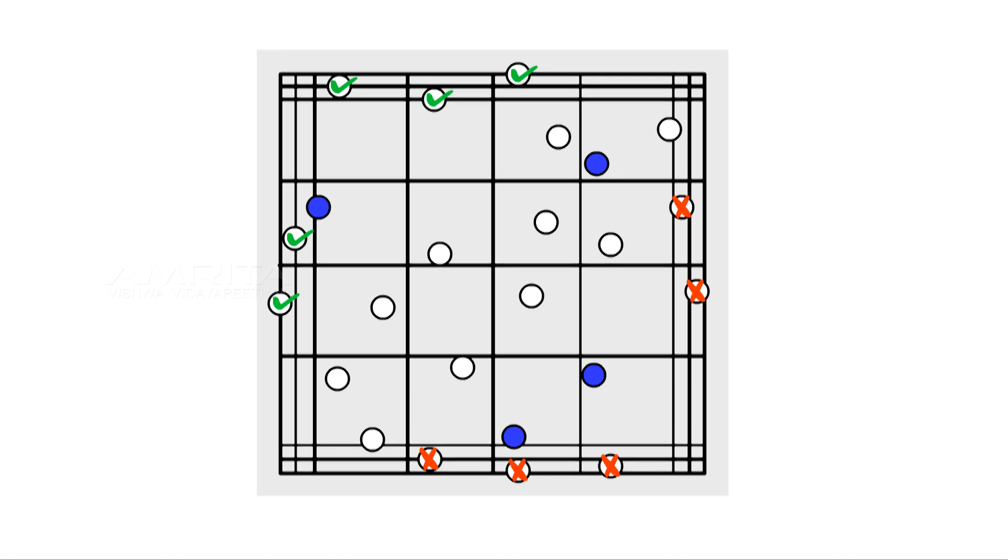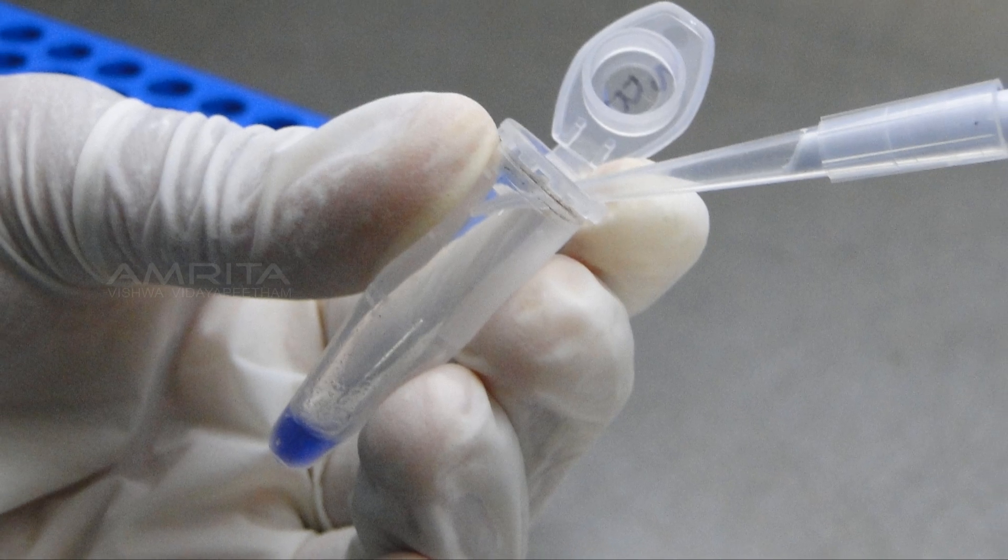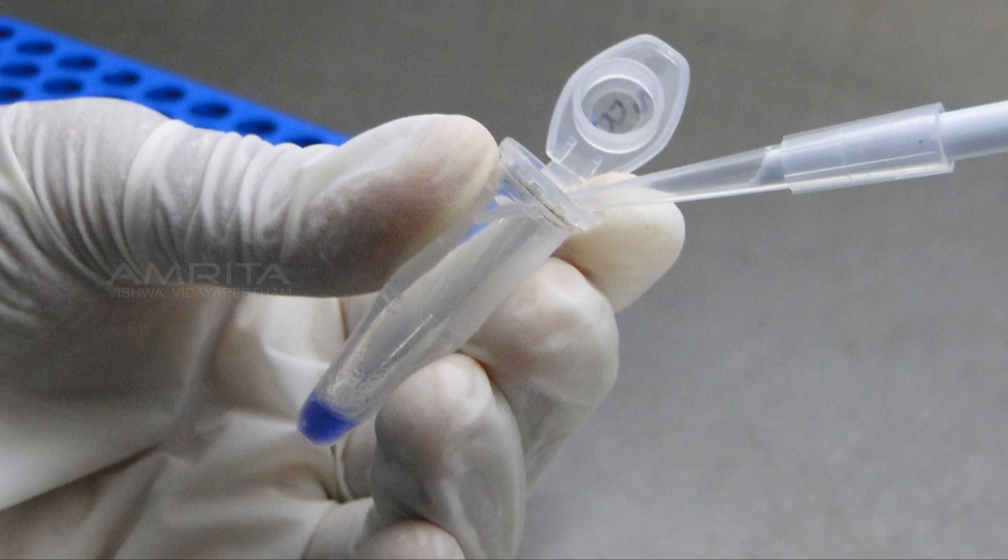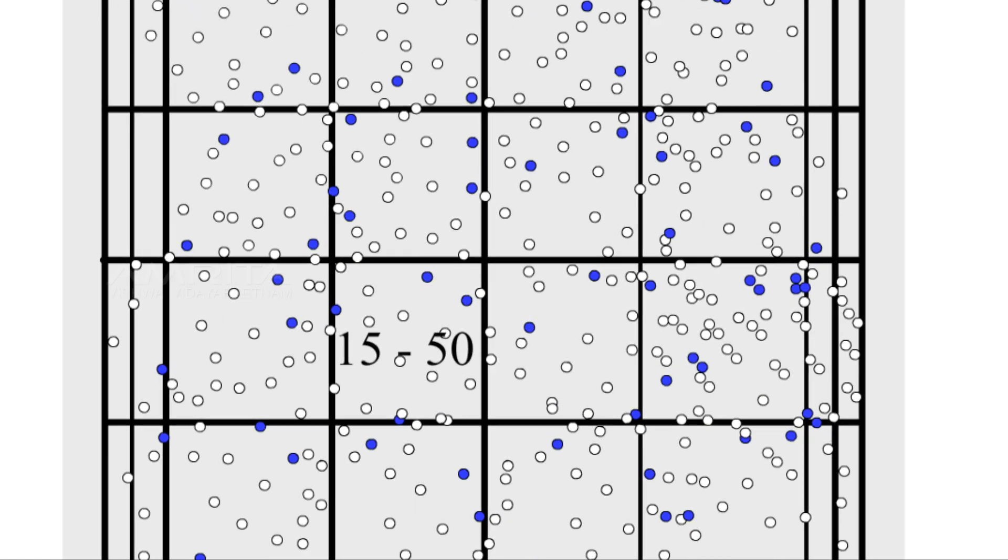If there are too many or too few cells to count, repeat the procedure either by concentrating or diluting the original suspension as appropriate. For an accurate determination, the total number of cells overlying 1 millimeter square should be between 15 and 50.